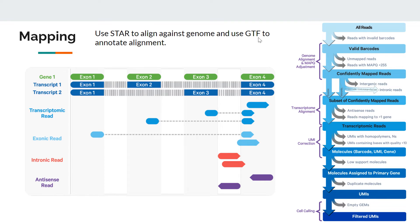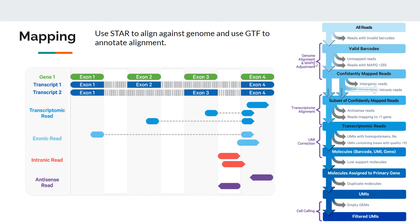After alignment, Cell Ranger uses a GTF annotation file — the gene annotation file — to annotate each alignment as exonic, intronic, or intergenic, or as an antisense read. Exonic reads lie in the exonic region, intronic reads lie in the intronic region, intergenic reads lie between genes. An antisense read means the gene is on the positive strand but the read aligned on the negative strand, or vice versa. Unmapped reads are then discarded, as are any reads with mapping quality less than 255.